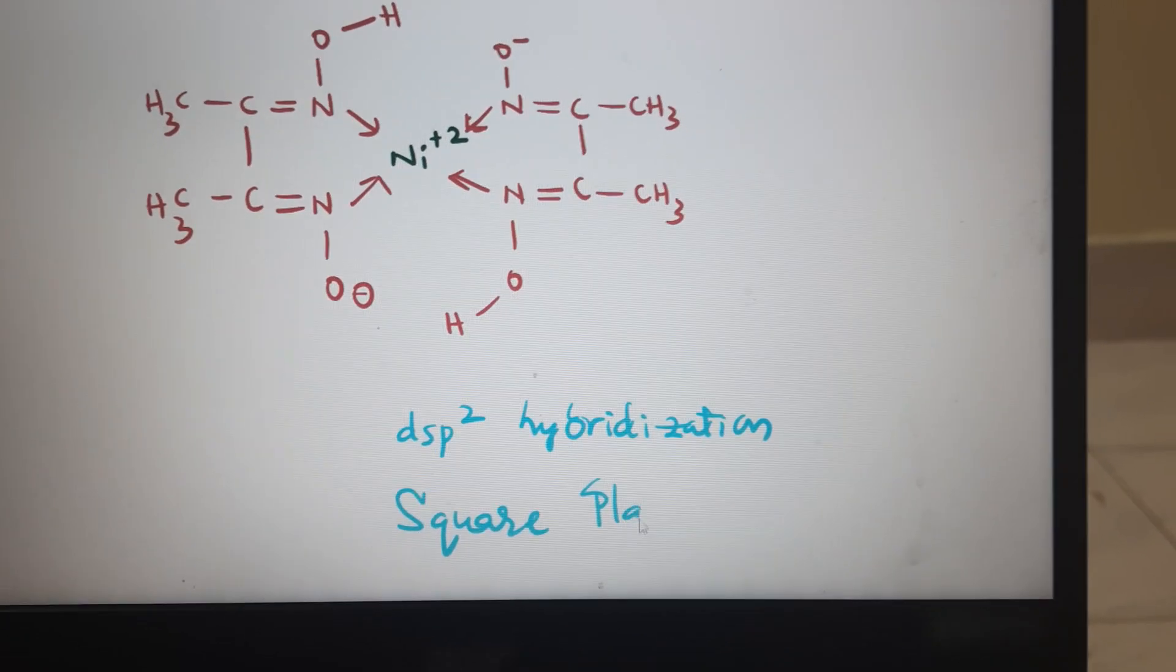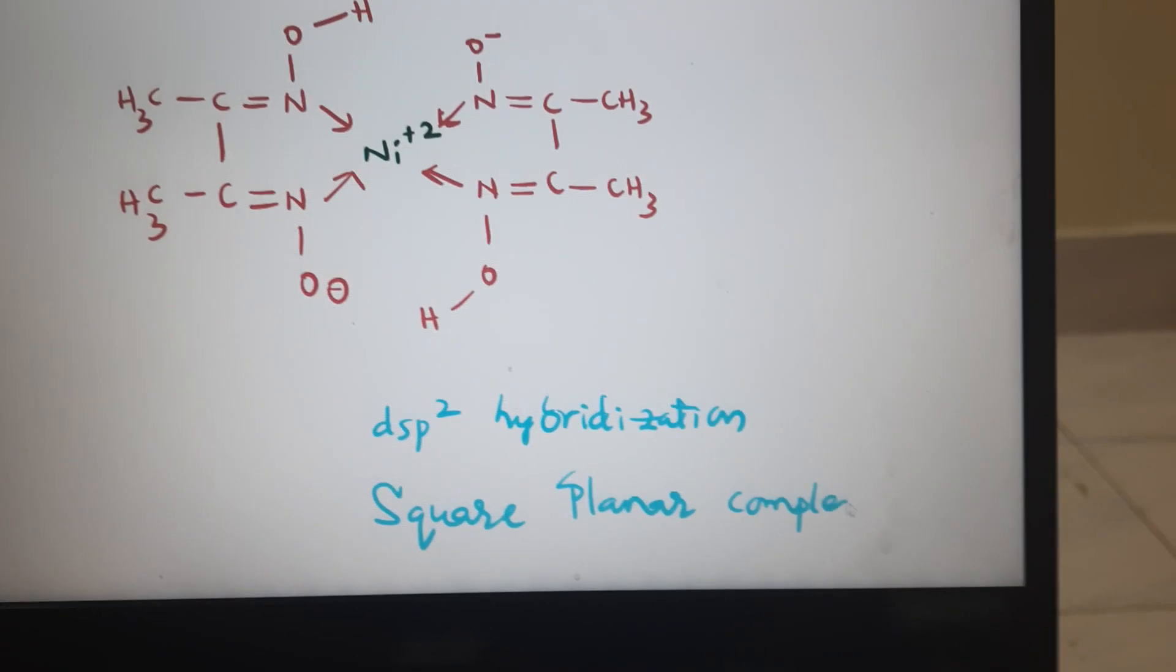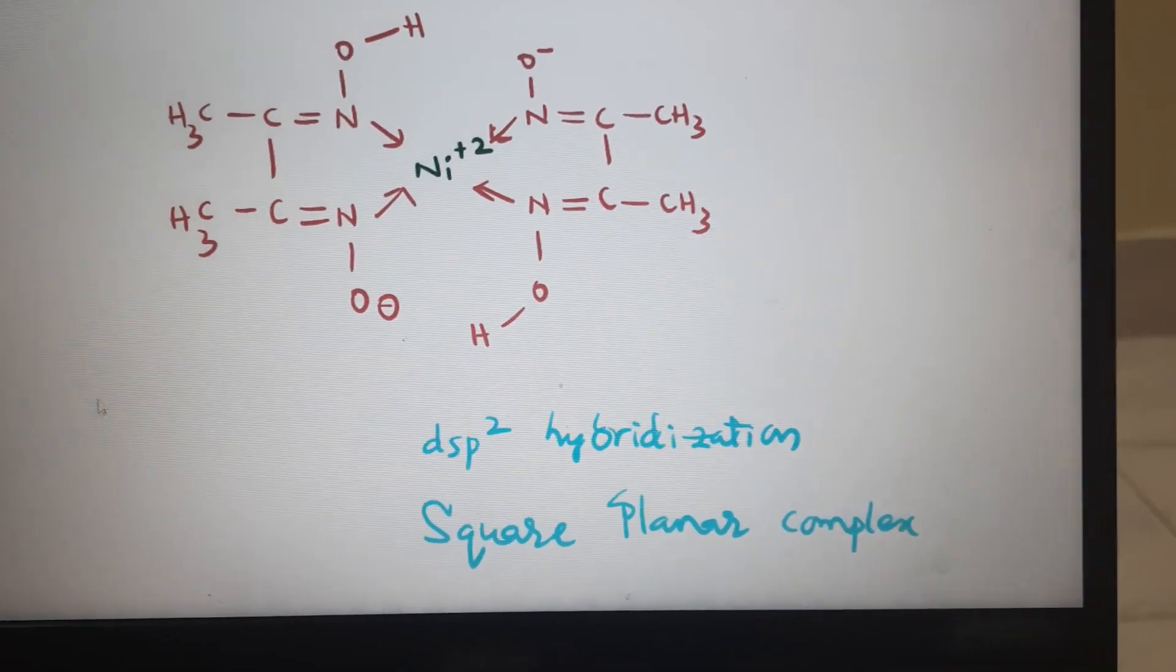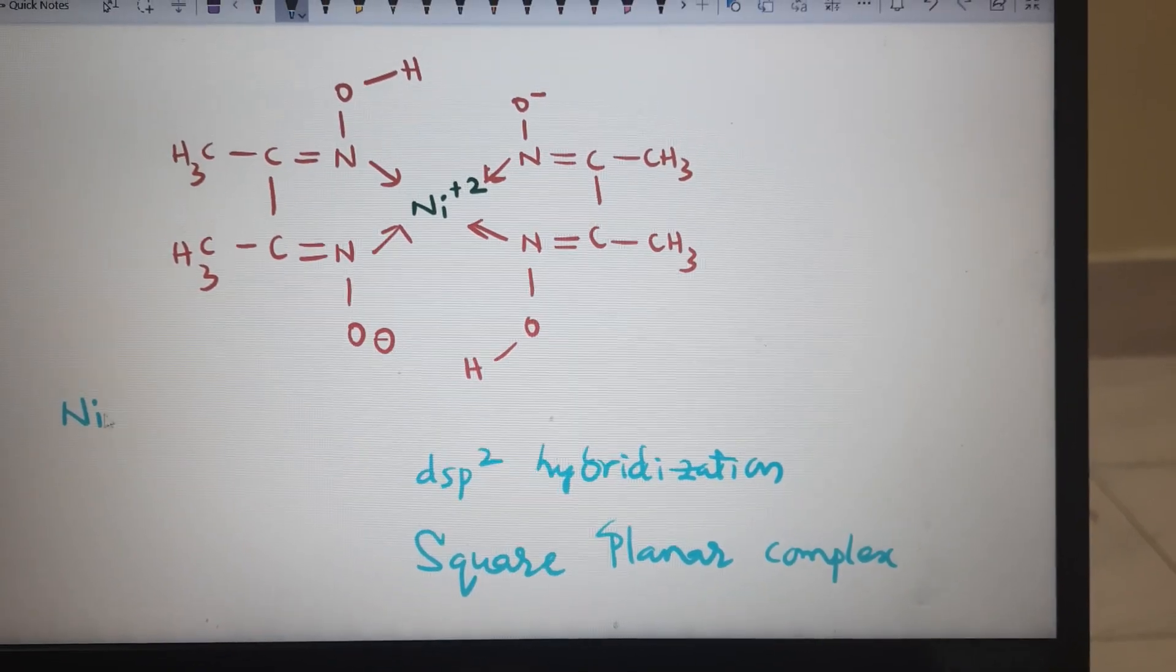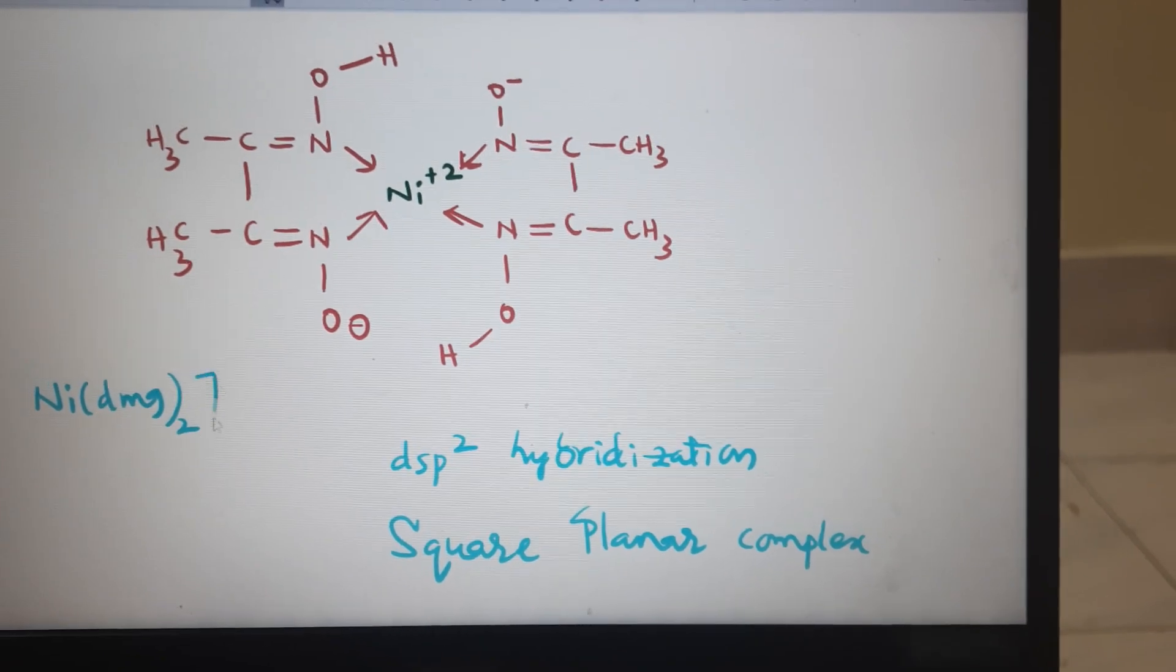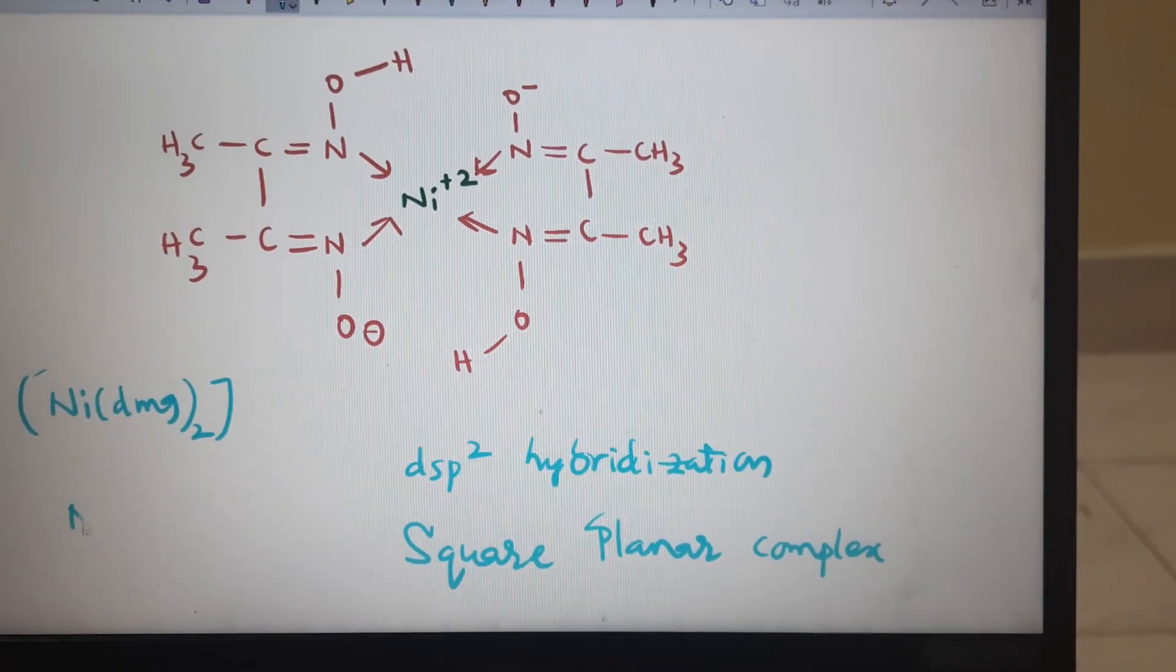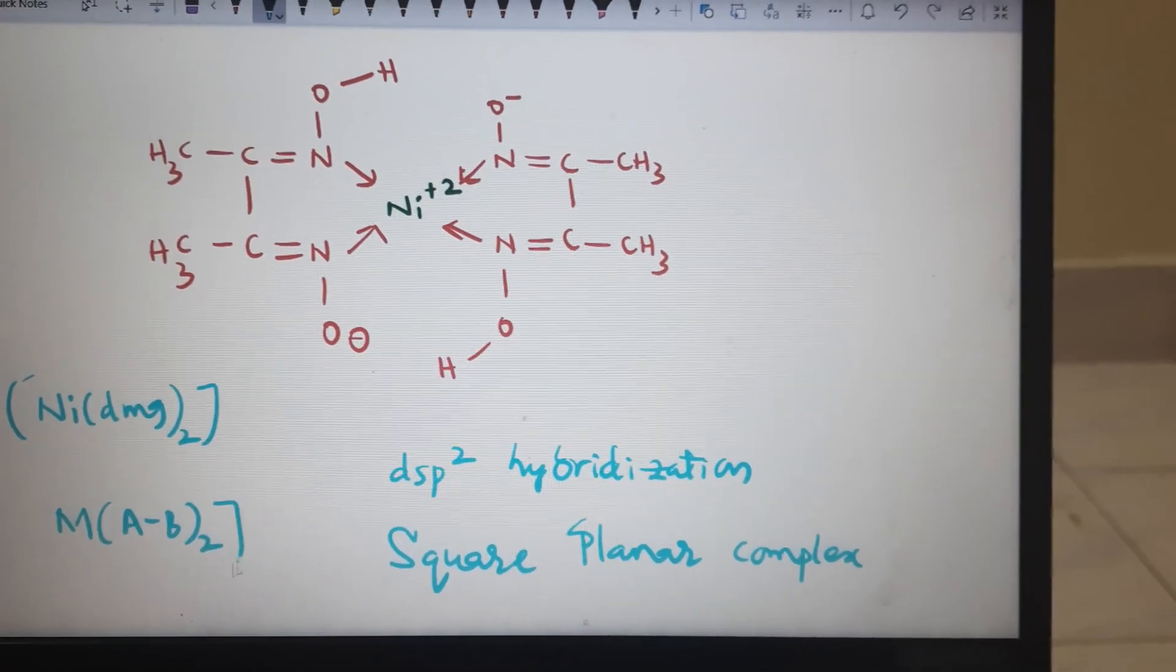Square planar complex. DMG is an unsymmetrical bidentate ligand, so nickel DMG taken twice is a metal with unsymmetrical bidentate ligand AB taken twice.